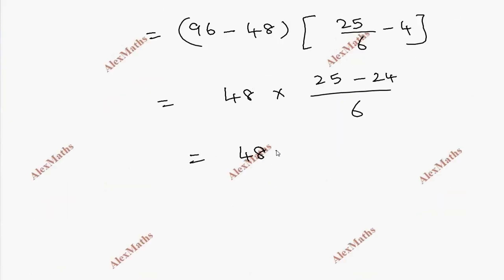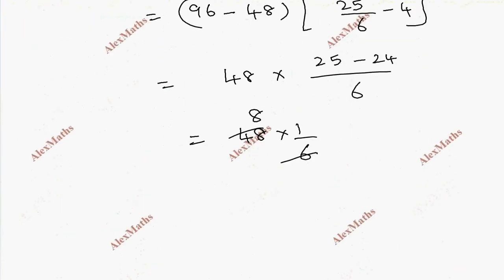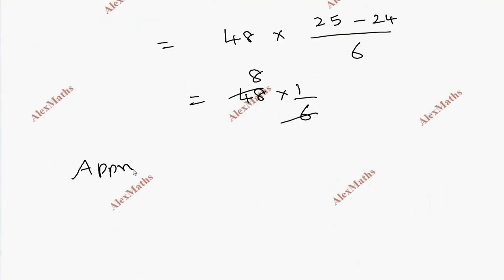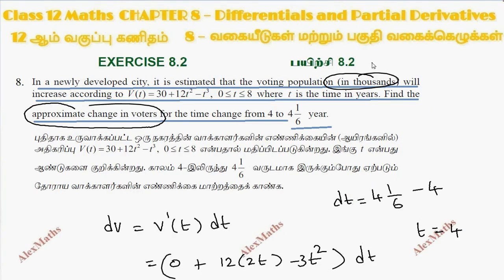This gives us 8. Since V is in thousands, the approximate change in voters equals 8 times 1000, so the approximate change in voters is 8000 voters.